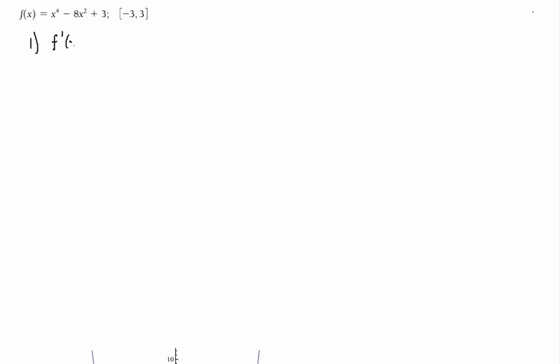So you get 4x³ - 16x, and then you set it equal to zero. We could factor—let me write it out loud first and then we'll factor.